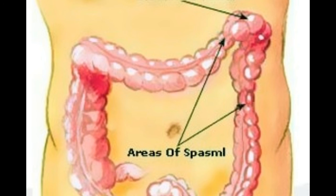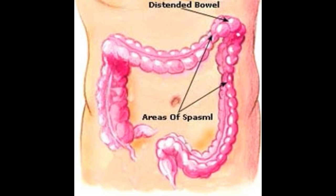The splenic flexure doesn't have a specific function of its own but is an important part of the colon as a whole. It aids in the movement of substances through the colon and can cause great discomfort when normal function is impeded. These problems can sometimes be difficult to pinpoint when they do arise, but many are treatable.